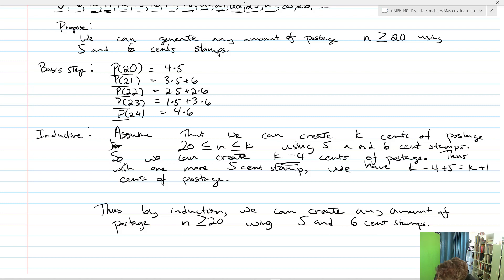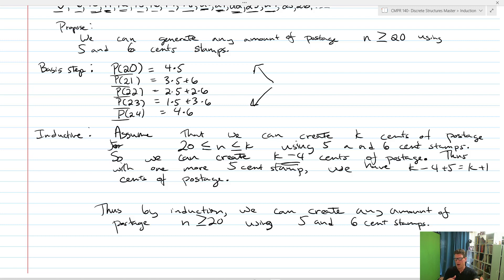For each and every one of those terms, you've got to prove those basis steps. In our case, we had to prove five basis steps — 20, 21, 22, 23, 24 — in order to cover the five cents of postage. Once we've done that, it's simply a matter of creating the right assumption from the bottom of our basis step all the way up through K, then doing a little bit more work to prove that your statement is true. Strong induction is fundamentally different — it's not just the Kth term, it's all the terms before K from your basis step all the way to K.